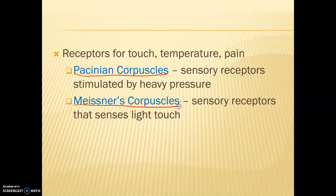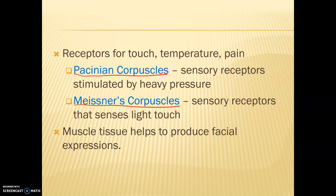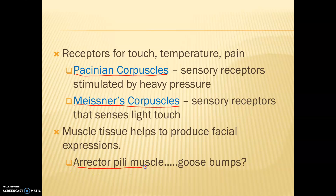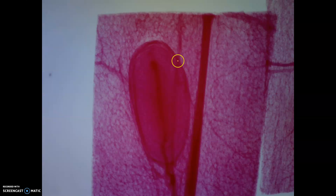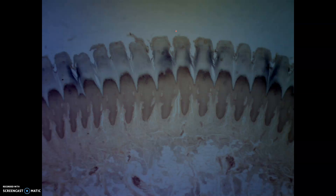Meissner's corpuscles sense very light touch — that would be someone gently tapping you on the shoulder, or feeling a raindrop. Muscle tissue in the skin also helps us produce some facial expressions. Something you may have heard of are erector pili muscles, which we'll talk about with our image. Here you can see the Pacinian corpuscle representing deep pressure, and here are our Meissner's corpuscles for very light touch, which are detected in these little corpuscles.